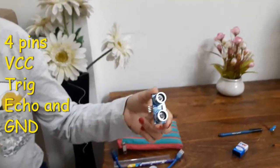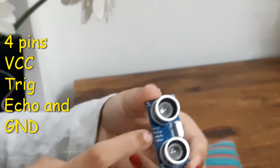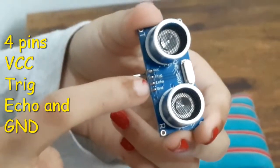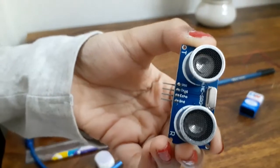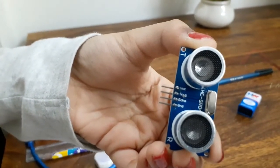There are only 4 pins: VCC, Trigger, Echo and Ground. The VCC pin powers the sensor typically with 5V.